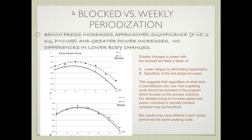Why is this the case? Because the blocked protocol eliminated hypertrophy, there's likely less fatigue, and we know fatigue strongly impairs power. Secondly, the last phase for five weeks was centered around power — that's just specificity. What this suggests is that regardless of what style of periodization you use, a peaking cycle should be included in the program which focuses on the primary outcome. You could do daily undulating periodization but end it with a block that is more traditional in nature. For athletes trying to increase speed and power, a blocked or partially blocked schedule may be beneficial, but results will vary for each group.